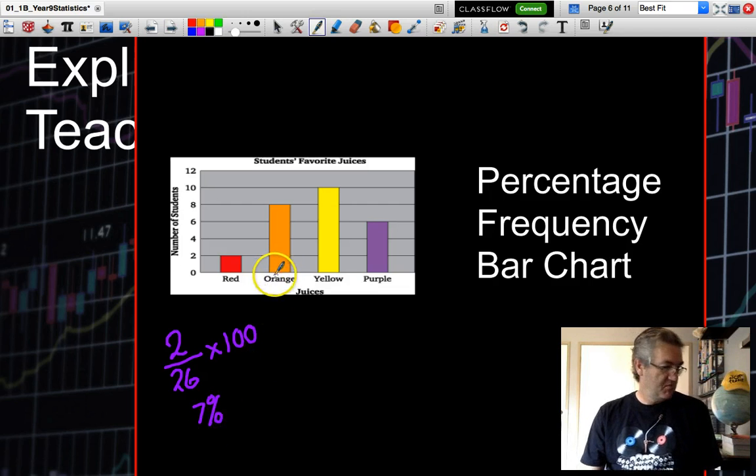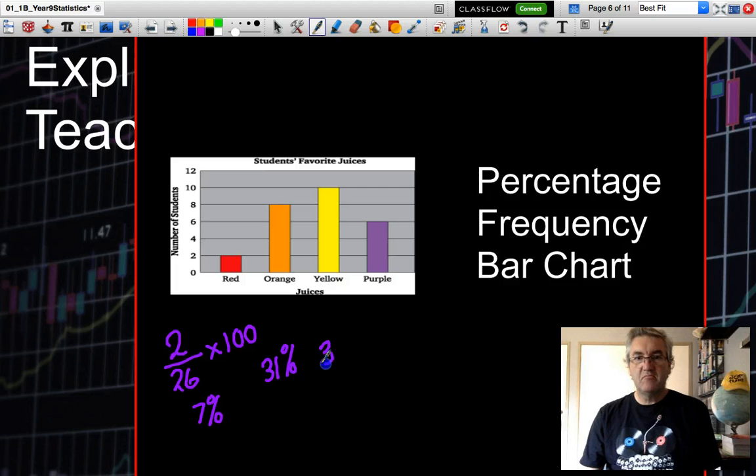Likewise, I could do a similar thing for the orange, and I'd get somewhere around the order of 31%. If I did yellow, 39%. And purple, 23%.